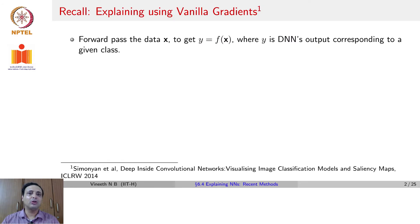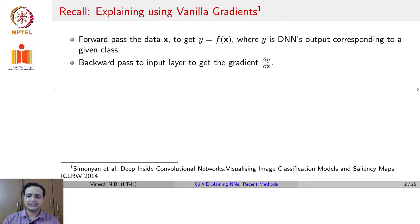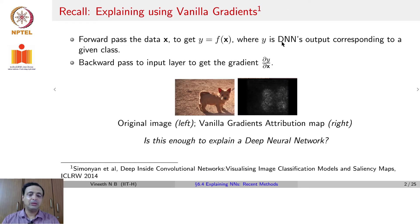Recalling our discussion on visualizing data gradients: you forward pass your input image x to get the output y = f(x) through the neural network, where y is the output corresponding to a particular class score. Then we do a backprop to the image to get the gradient ∂y/∂x, and using those gradients we visualize the image in terms of gradients by taking the maximum across channels to get an attribution map — a map of how much each input attributes to the output.